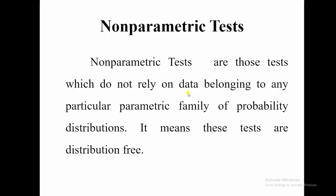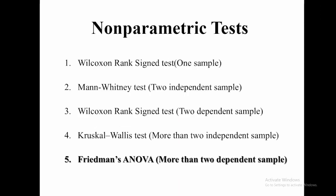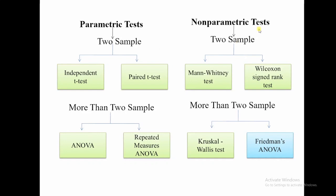As we know, non-parametric tests are assumption-free tests and we do not check normality and homogeneity of the data. Whether my data is normal or homogenous, it does not matter. Now, what is the condition of Friedman's ANOVA? This test is equivalent to the parametric test that is repeated measures ANOVA.